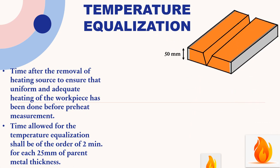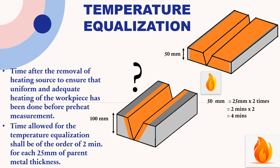Consider an example of a 50mm thick workpiece. It is 2 times 25mm thickness, and 2 minutes for each 25mm thickness is required, so a total of 4 minutes of temperature equalization is needed. Now calculate: what will be the answer for a 100mm thick workpiece? It is 8 minutes.